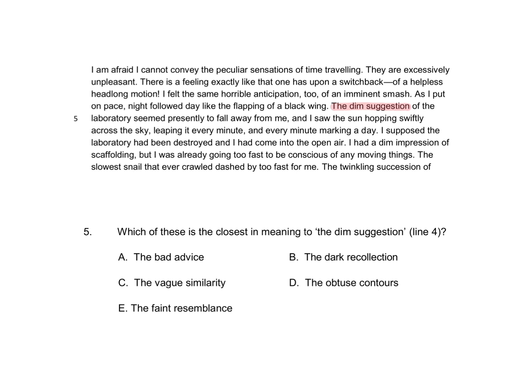Here we should give option E as the right answer. We're talking about a faint resemblance of something. So a dim suggestion means that the laboratory falls away and is not very clear to the naked eye. There is a faint resemblance of it.